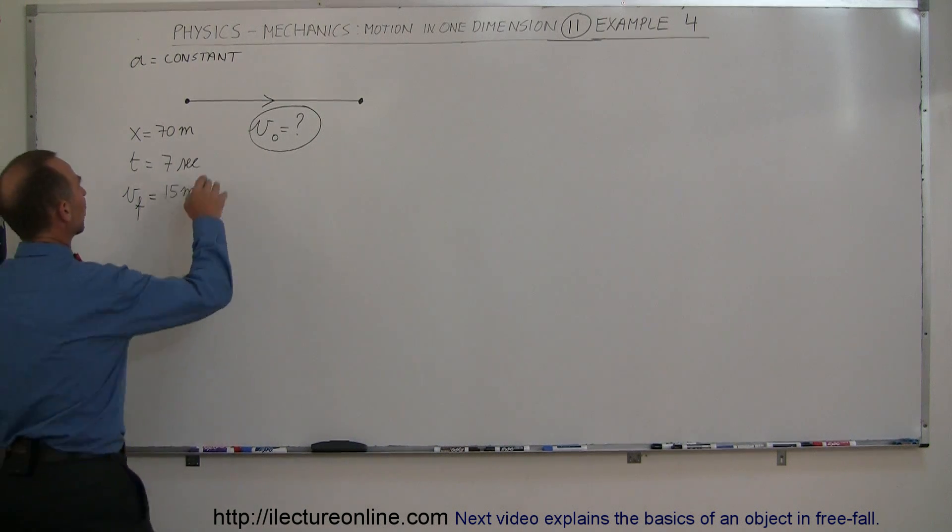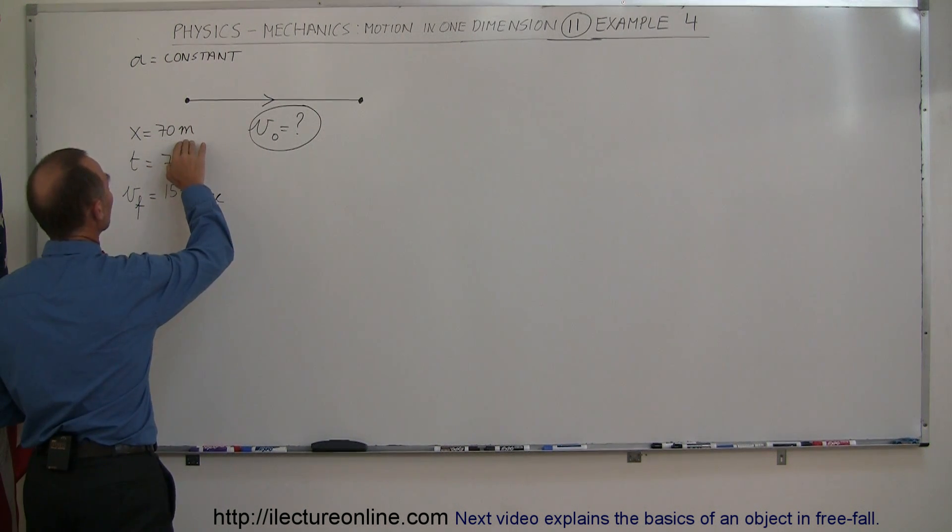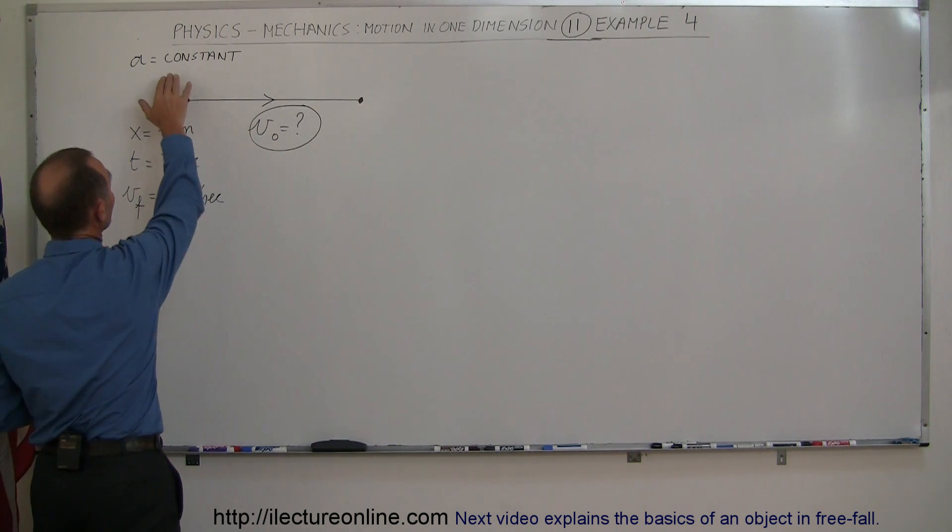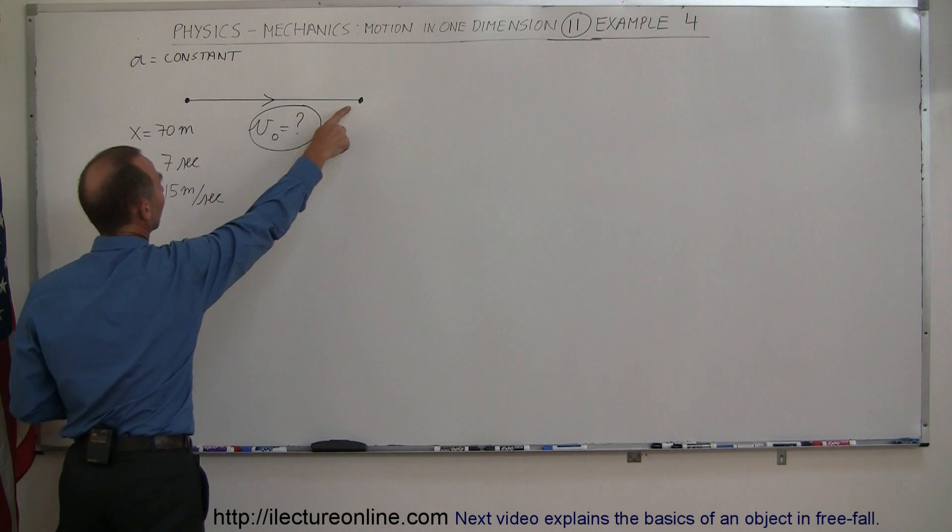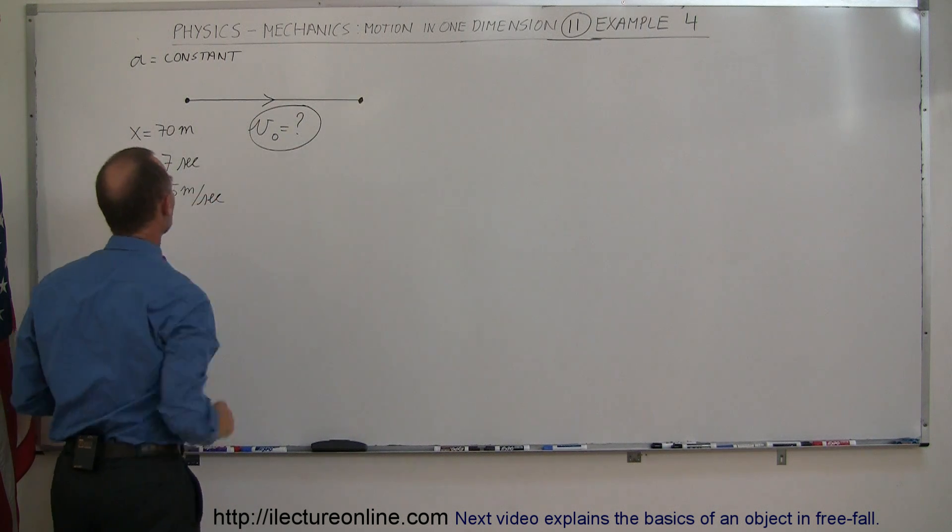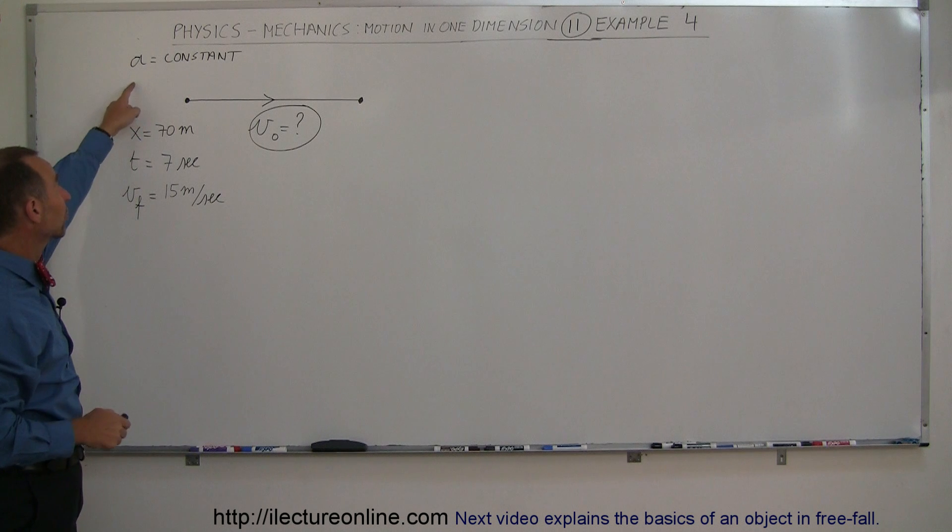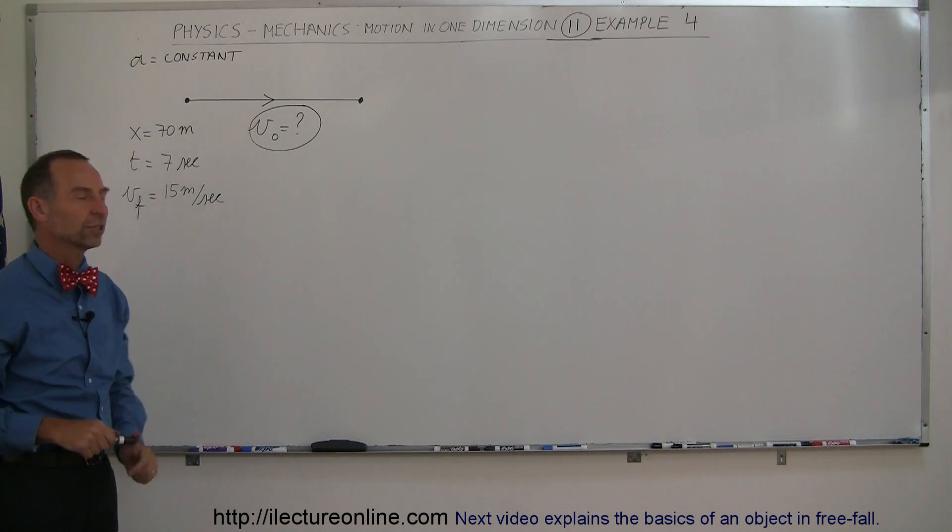An object travels a distance of 70 meters, taking a total time of 7 seconds. With constant acceleration, when the object finally arrives after 70 meters of travel, the object is traveling at 15 meters per second. Assuming constant acceleration, what is the initial velocity when it started?